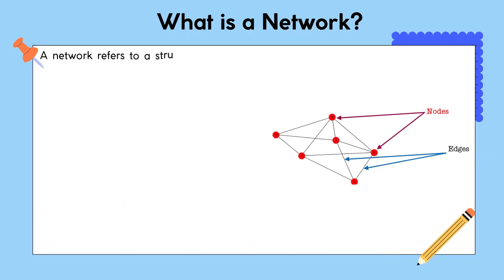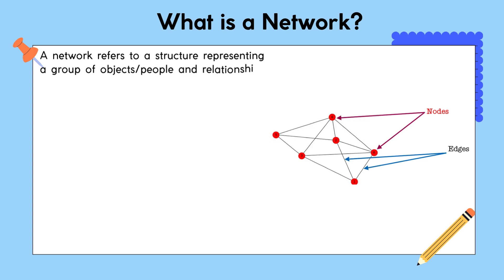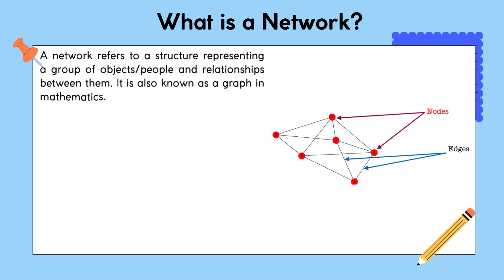A network refers to a structure representing a group of objects, people, and relationships between them. It is also known as a graph in mathematics.